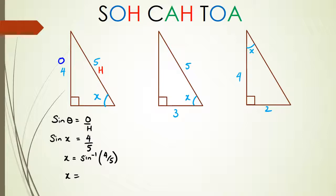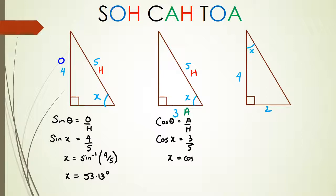That gives us 53.13 degrees. Looking at the middle example: 5 is the hypotenuse, there's nothing on the opposite side, so 3 is adjacent - we're using the cos rule because of A and H. So cos θ = adjacent over hypotenuse, cos x = 3/5, and x = inverse cos of 3/5, which also equals 53.13 degrees. That's because we're working with a Pythagorean triple triangle.